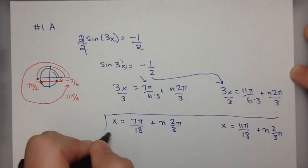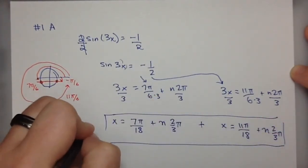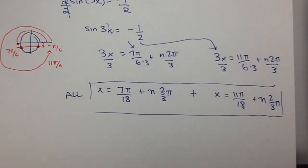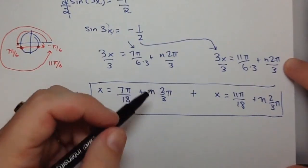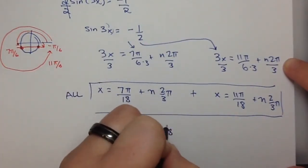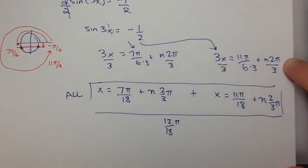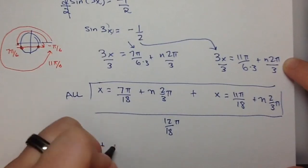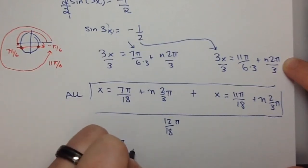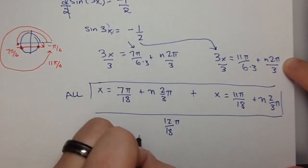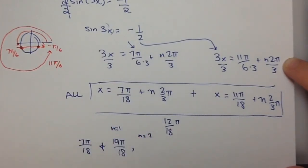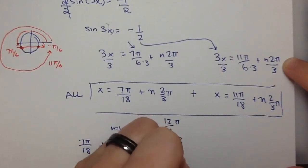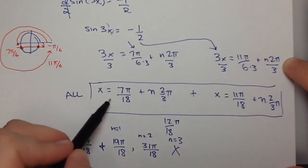This is the general solution. And then we're asked to find solutions on the domain from 0 to 2π. So 2/3 π can be rewritten as 12π over 18. Starting with 7π over 18, adding 12π over 18 gives us 19π over 18 when n equals 1. When n equals 2, we get 31π over 18. When n equals 3, we've gone too far. So the first solution gives us these three values.